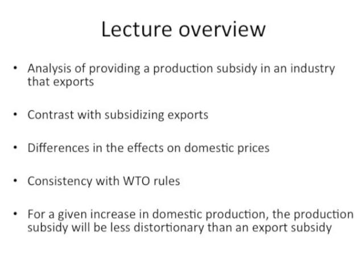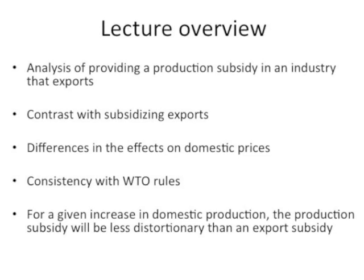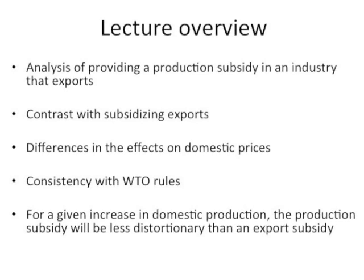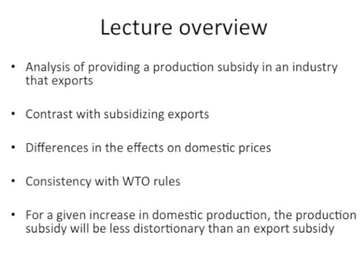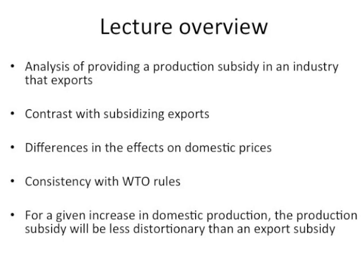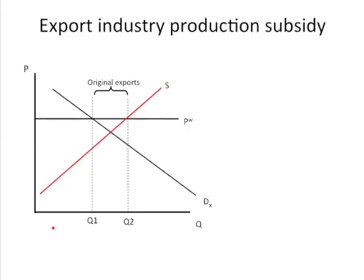Broadly speaking, an export subsidy is going to be more damaging to a domestic economy than the alternative policy of a production subsidy in the export market. Export subsidies are banned for manufactured goods according to WTO agreements. A payment that goes to a firm because it exports is officially banned under these international trade obligations. Sometimes a government might do that, but they stand the risk of getting in trouble with their international trade obligations.